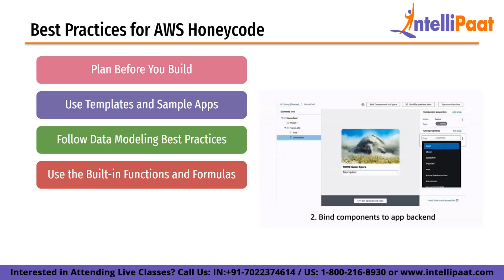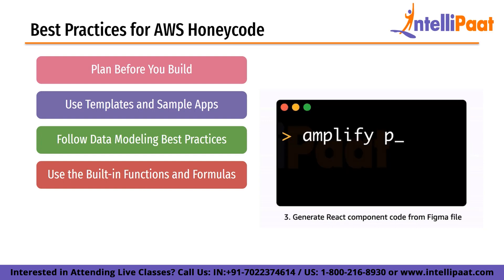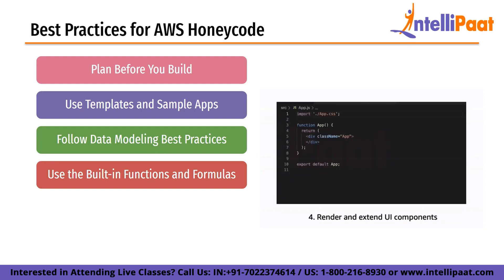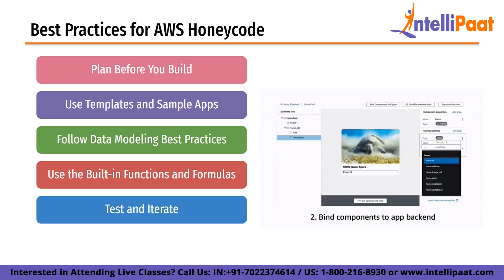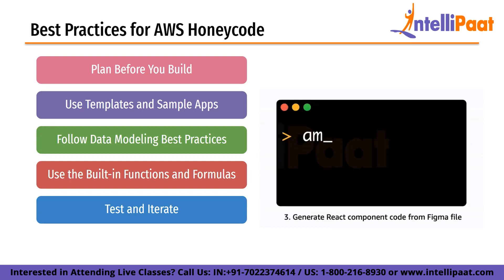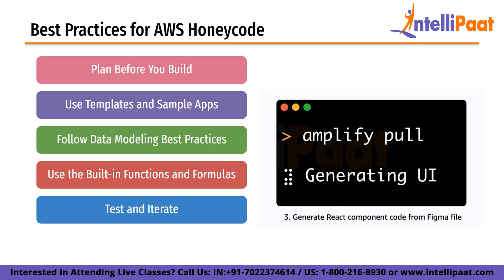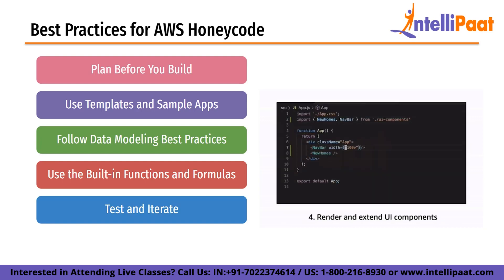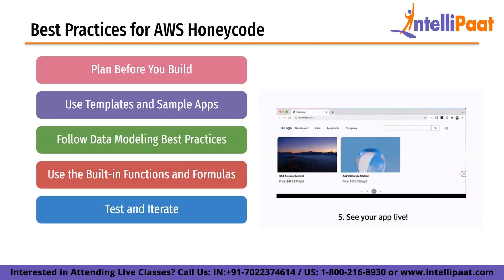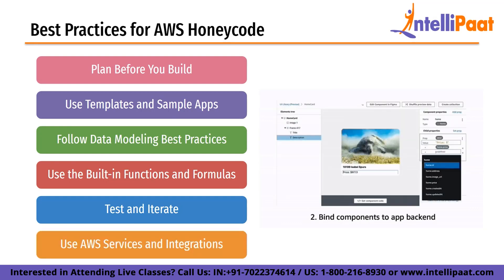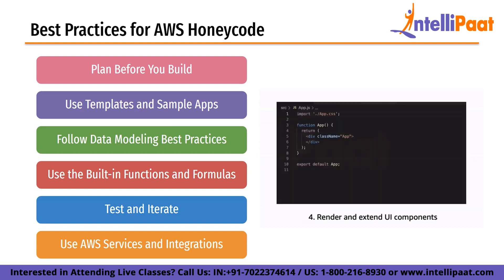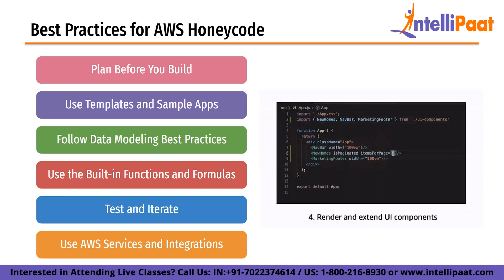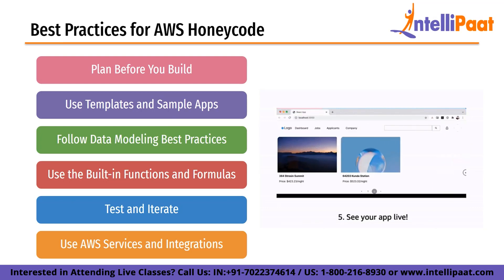Next on the list is to use the built-in functions and formulas. Honeycode offers a range of built-in functions and formulas that can make app development easier and more efficient. These functions and formulas can be used to automate tasks, perform calculations and validate data. Test and iterate — it is important to test the app thoroughly before releasing it to users. User testing can help identify usability issues and areas for improvement, leading to an app optimized for the user's needs. Finally, use AWS services and integrations. Honeycode can be integrated with other AWS services such as Lambda, API Gateway and S3 to provide additional flexibility and scalability.